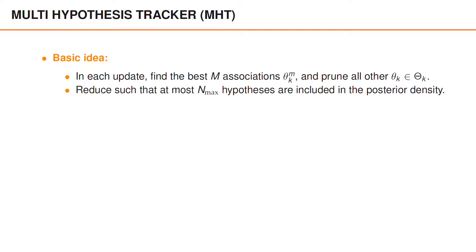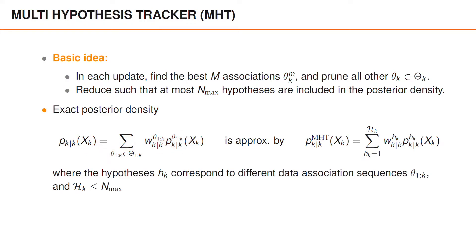The motivation behind MHT can be understood in terms of the approximation of the posterior density. By having an approximation with several hypotheses that have high probability, we should get a more accurate tracking filter than we would with fewer hypotheses. The number of hypotheses is kept below a maximum number because this allows us to control the computational cost of the algorithm. The exact posterior density is approximated by a density with multiple hypotheses, indexed by lowercase h, and we denote the number of hypotheses by calligraphic H. Each hypothesis corresponds to a sequence of valid data associations.